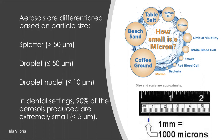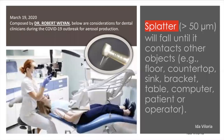To give you an idea of how small SARS-CoV-2 is, it's about 0.12 micron. Therefore, it is something that you don't see. According to studies, 90% of the aerosols produced are extremely small particles less than 5 microns. The ones that we can see are the splatter, which is more than 50 microns in size.